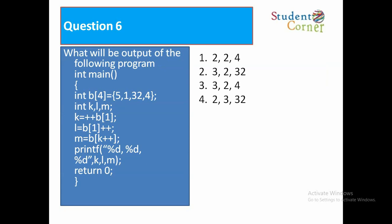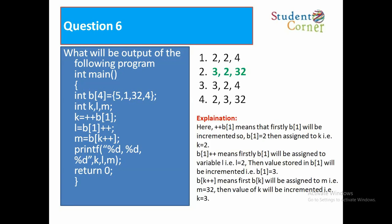Question number six: What will be the output of the following program? int main() { int b[4] = {5, 1, 32, 4}; int k, l, m; k = ++b[1]; l = b[1]++; m = b[k]++; printf("%d %d %d", k, l, m); return 0; } Options: 1) 2 2 4, 2) 3 2 32, 3) 3 2 4, 4) 2 3 32. The answer is 3 2 32.